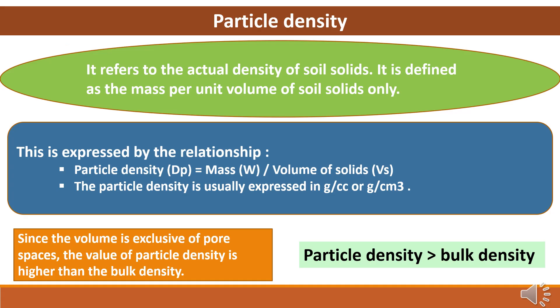Particle density varies from bulk density. It refers to the actual density of soil solids and is defined as the mass per unit volume of soil solids only — pore spaces are not counted. Particle density is expressed as mass or weight divided by volume of solids and is generally expressed in grams per cubic centimeter. Particle density is higher than bulk density since the volume is exclusive of pore spaces.